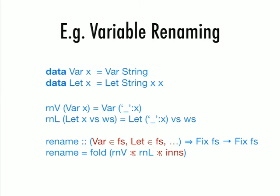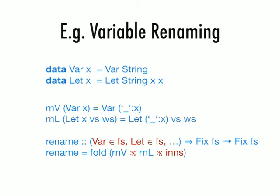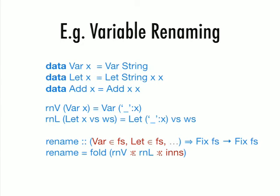Given Inns, you can imagine this Inns is just an identity transformation. This Inns can have a more general type which I'm going to show you later. Starting with this Inns, now you can define rename slightly differently. Start with Inns, you rewrite the entry for Let using the algebra for Let, and you rewrite the entry for Var by this rnV, another algebra. The type of rename becomes: it takes a fixed point of Fs to a fixed point of Fs, provided that Var is in Fs and Let is in Fs.